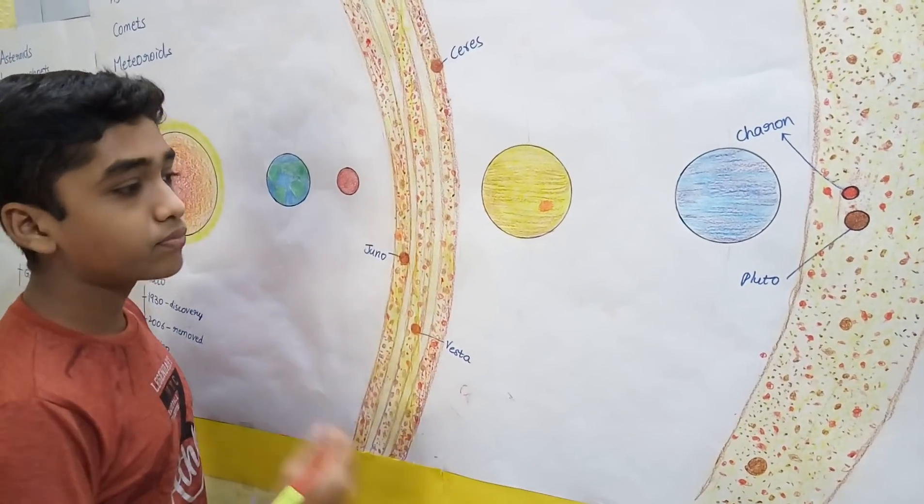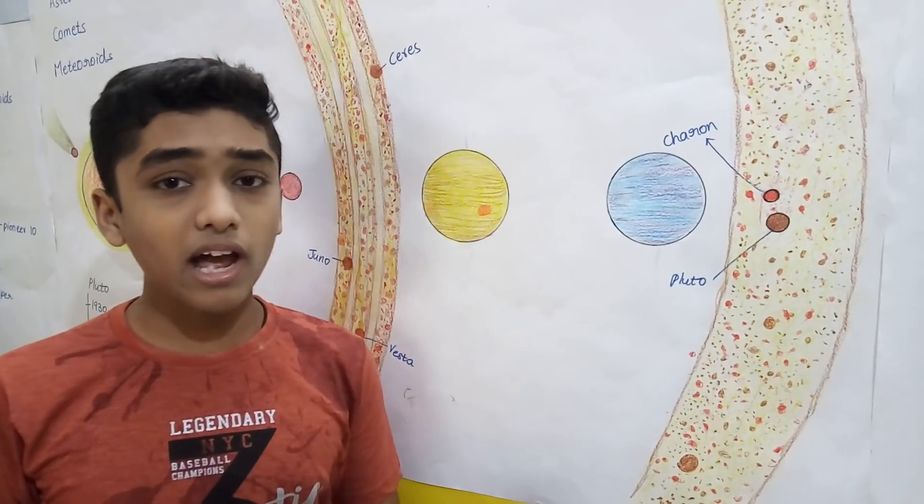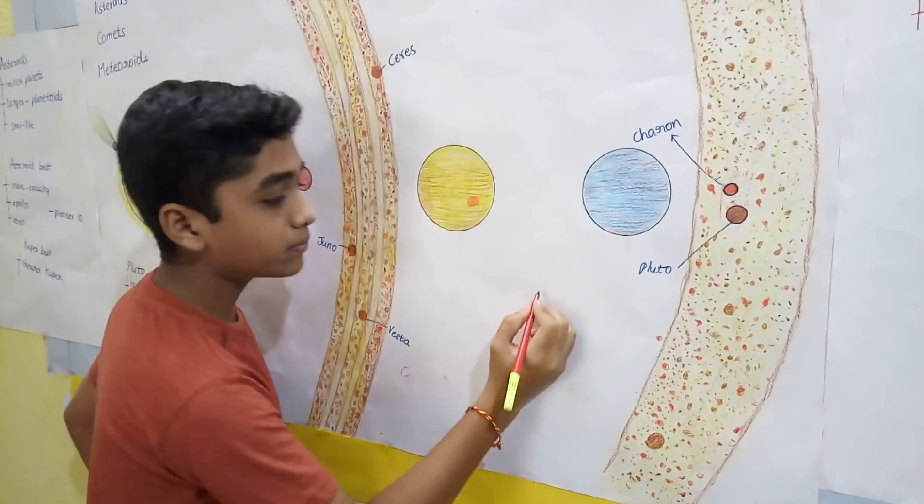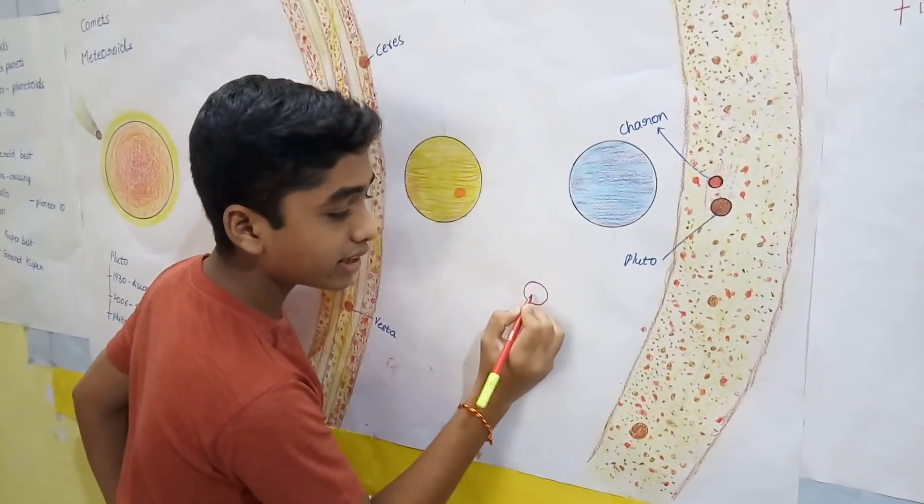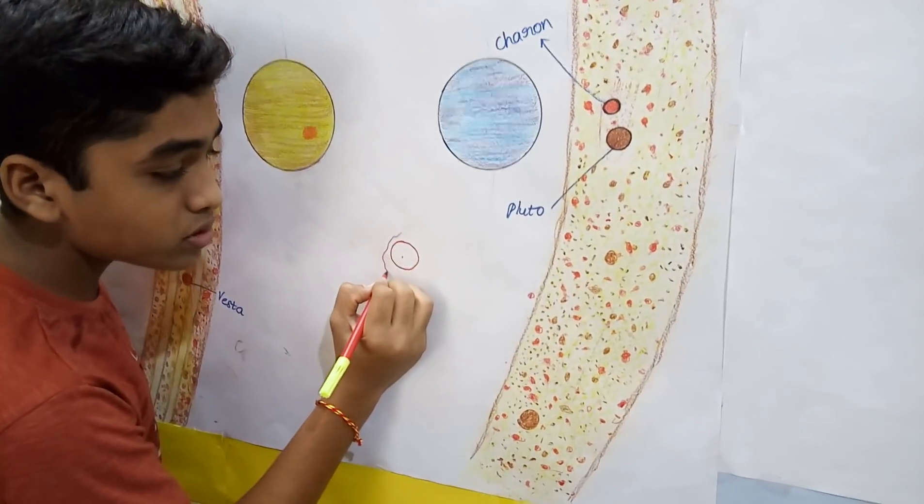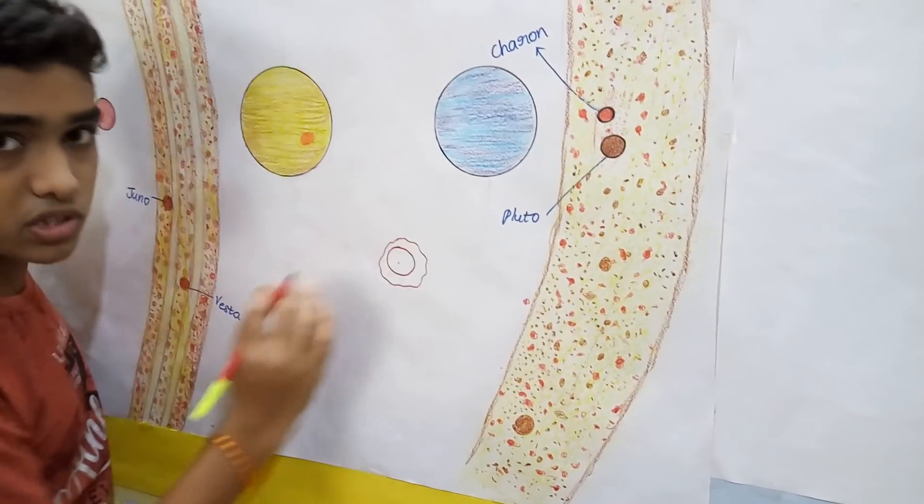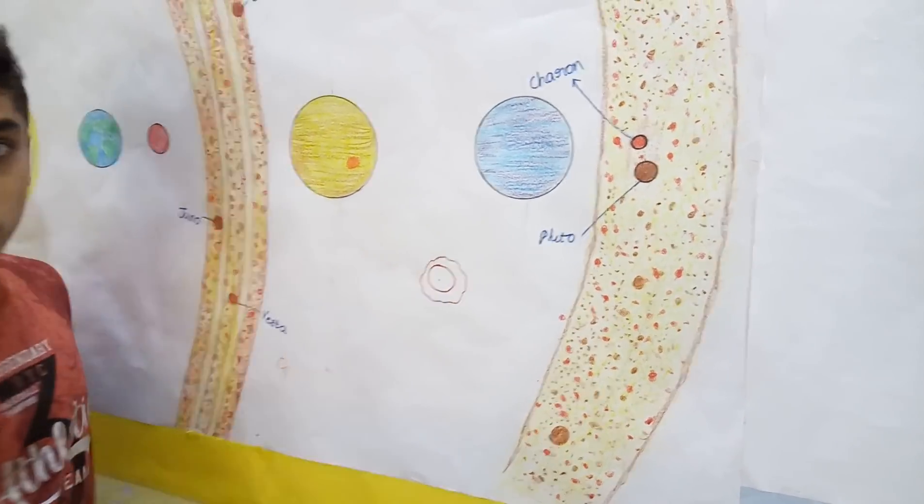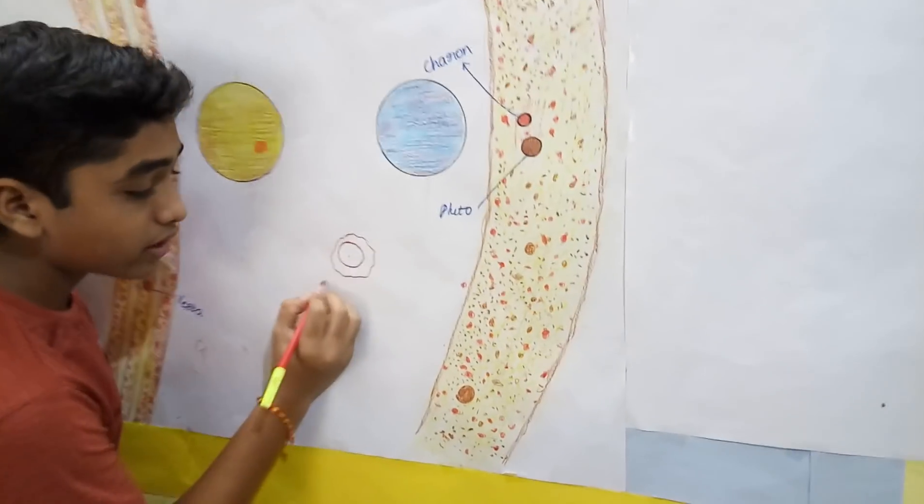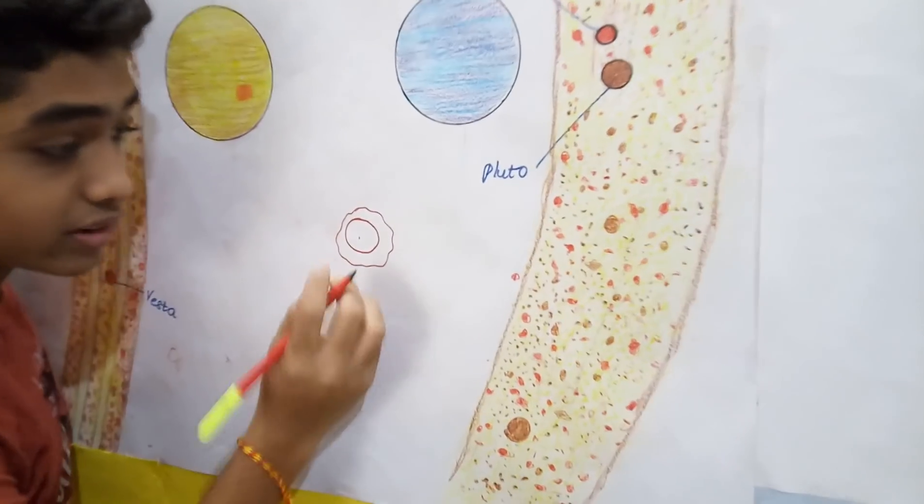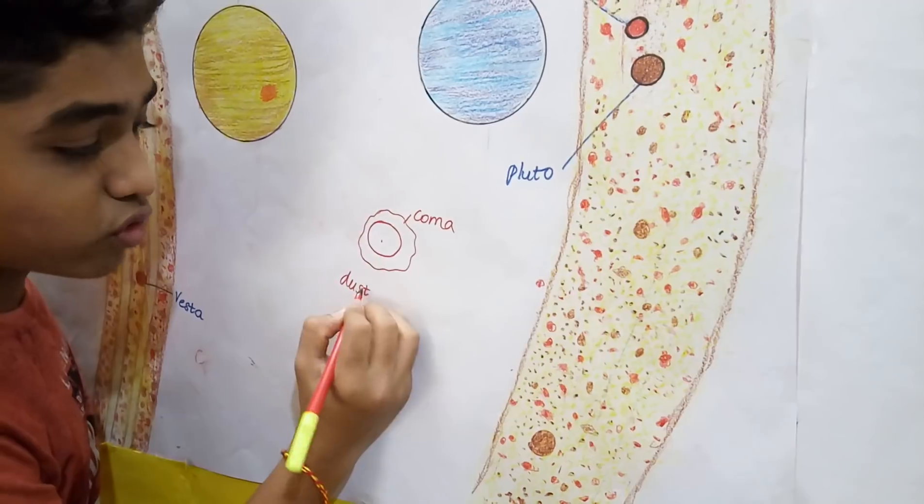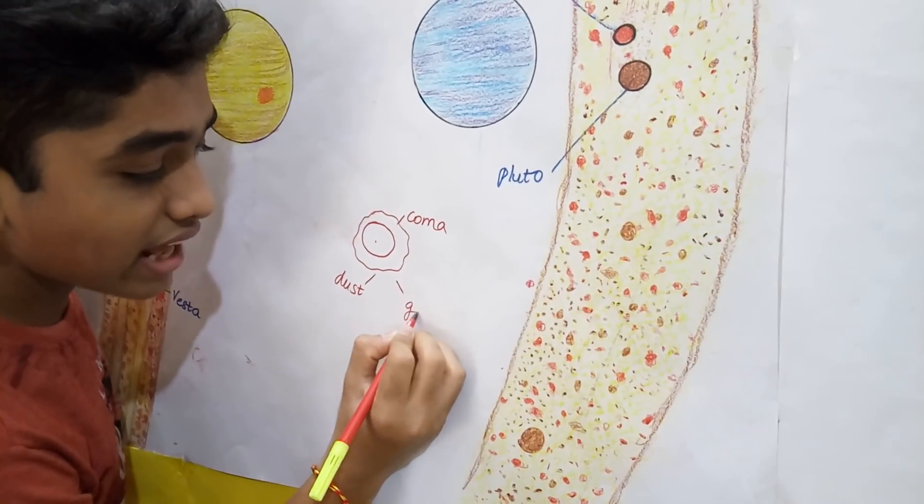When they approach the sun, the dust and gas which is present in that comet sublimes and forms an atmosphere-like substance around what we call as nucleus. This is formed by dust. This is known as coma. This is formed of dust as well as gas.